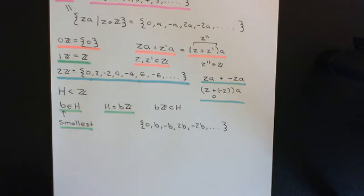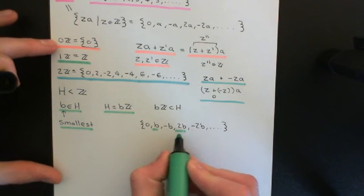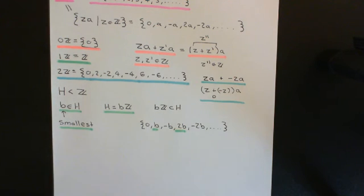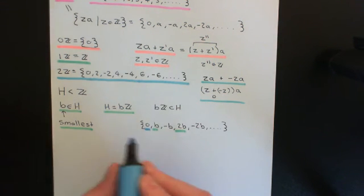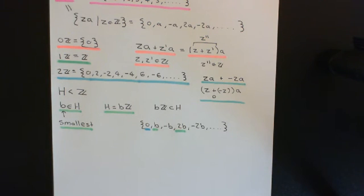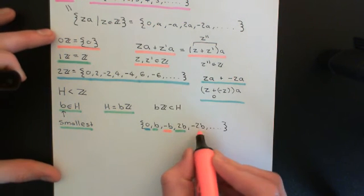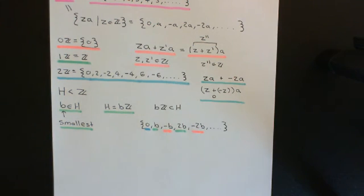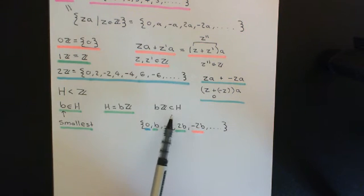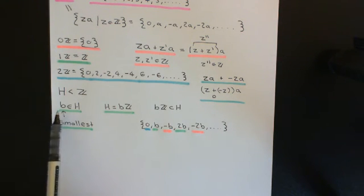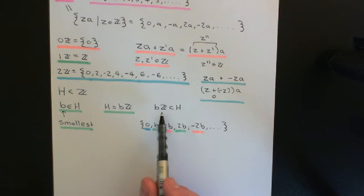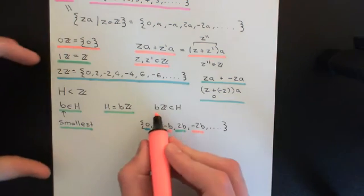We know the identity is going to be within H because all subgroups must contain the identity, so 0 is certainly going to be there. And all of the negatives are going to have to be there if we're going to have inverses. That's why the entire BZ set has to be within H — otherwise H cannot possibly be a subgroup. So as soon as any subgroup contains B, you have to contain all integer multiples of B as well. We've now shown that BZ is indeed a subset of capital H.